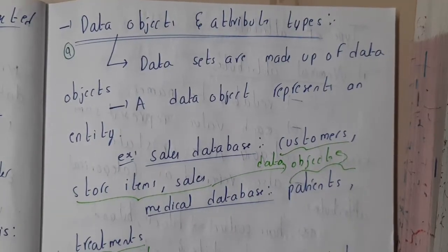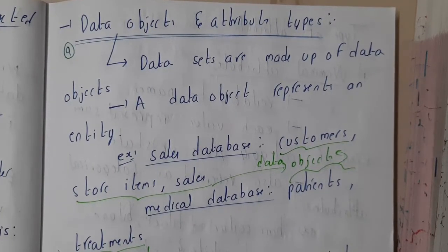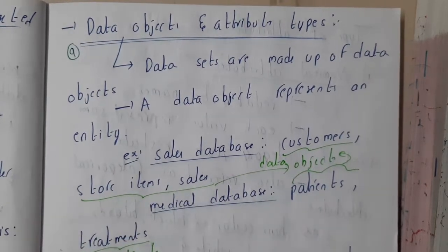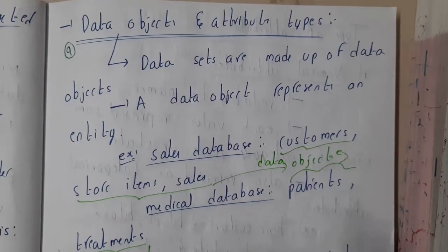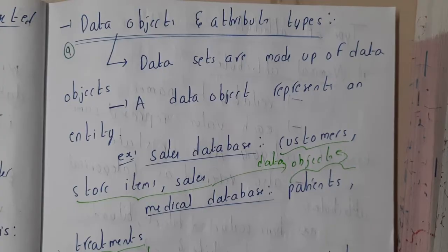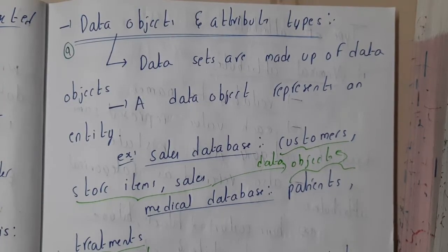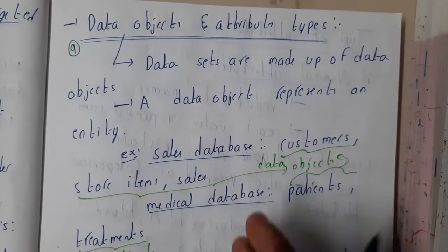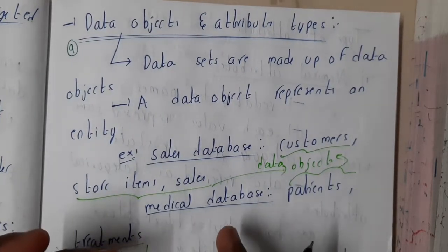Hello guys, we are back with our next lecture. In this lecture let us go through the concept of data objects and attribute types. This is one of the most important topics — you could expect a two-marks question directly from this topic, where he could give a variable and ask you what it is. In some situations you might get an LAQ also, so please at least understand it once.